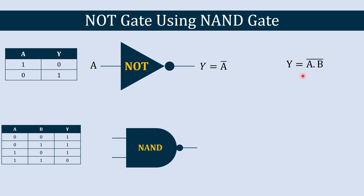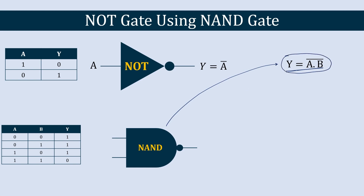Our purpose is to modify the NAND gate or use a combination of NAND gates in such a way that we get the same output as a NOT gate. To achieve that, we need to modify the NAND gate equation Y = A·B̄ so that it gives exactly Y = Ā.